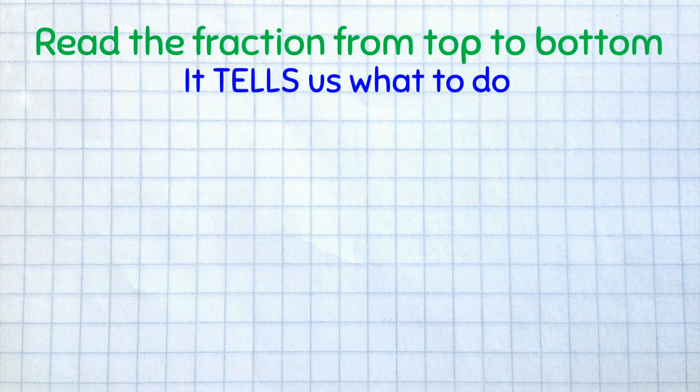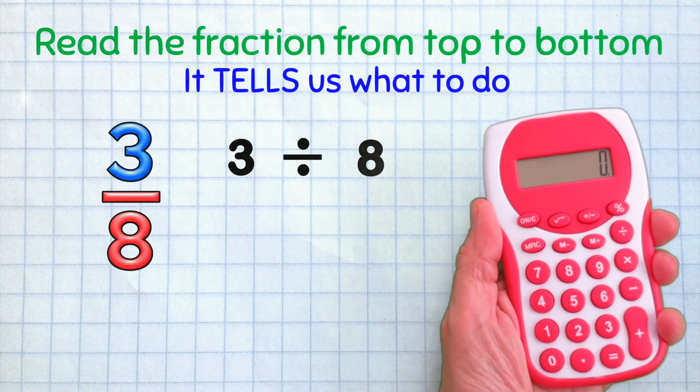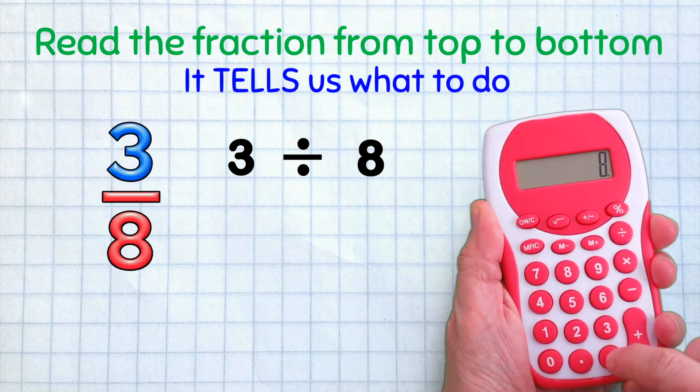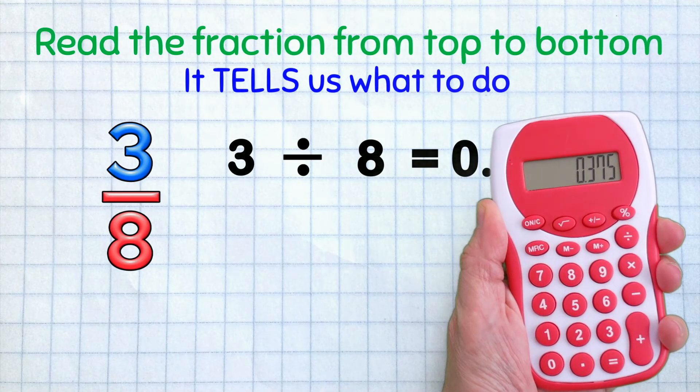Now let's go back to 3 eighths. Read it as 3 divided by 8. On the calculator, 3 divided by 8 is 0.375. Great!